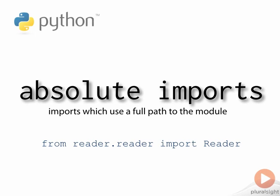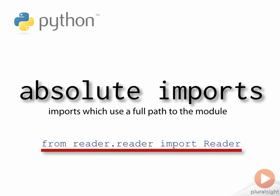Up to now, we've always imported modules and packages using their full names. For example, when we imported the reader class into the reader top-level package, we used `from reader.reader import reader`. This is called an absolute import because we specify the full package and sub-modules path to the reader sub-module.